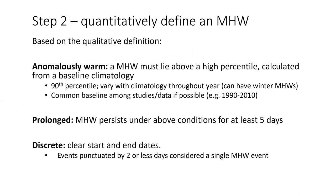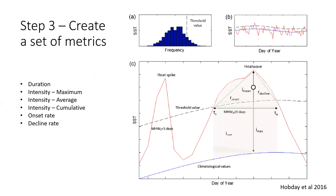Once we had a qualitative definition, we made it quantitative — drawing from the definition used for atmospheric heatwaves. An atmospheric heatwave is anything above the 90th percentile of temperatures experienced at a location. We applied the same definition in the ocean: any temperature above the 90th percentile for that area at that time of year is a marine heatwave if it persists for at least five days. On land the threshold is three days; in the ocean it's five. If temperatures cool slightly but the cooling lasts fewer than two days, we still consider it one continuous event.